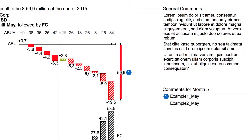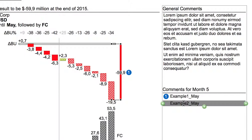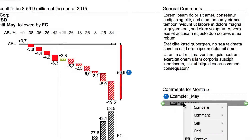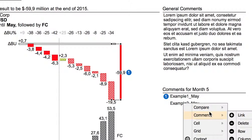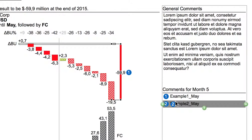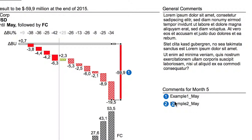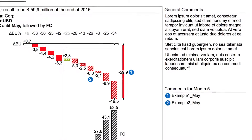Now we want to link our note to the chart. Simply right click to open the menu and choose Link. Two numbers will appear, and the second number can be dragged and dropped to the chart. The number automatically jumps to the appropriate data point.